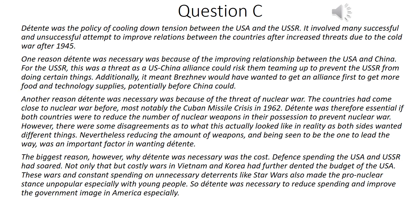Détente was the policy of cooling down tension between the USA and the USSR. It involved many successful and unsuccessful attempts to improve relations between the countries after increased threats due to the Cold War after 1945. One reason détente was necessary was because of the improving relationship between the USA and China. For the USSR, this was a threat as a US-China alliance could risk them teaming up against the USSR. Additionally, it meant Brezhnev would have wanted to secure an alliance first to gain more food and technology supplies, potentially before China could.